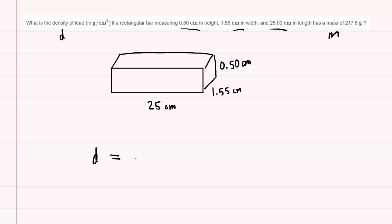We know the density of an object is equal to its mass divided by the volume. So in order to get the density, we're going to need the mass and the volume. The mass is given.